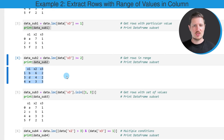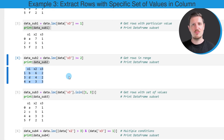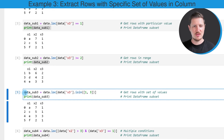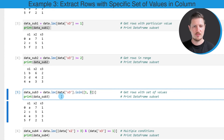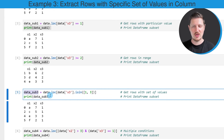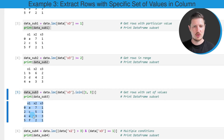We can also specify that we want to extract rows based on multiple values using the isin function. In this case, I'm specifying that I want to keep all rows where column x3 is equal to the value one or equal to the value three. After running these lines of code, a new DataFrame called data_sub3 is created, containing four rows that have either the value one or the value three in column x3.